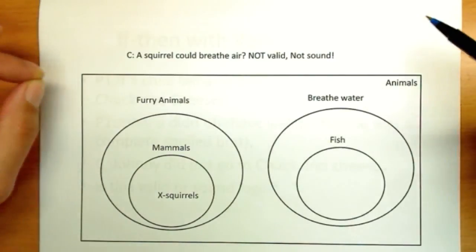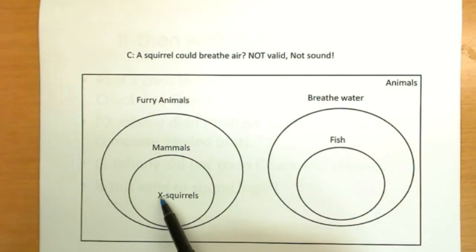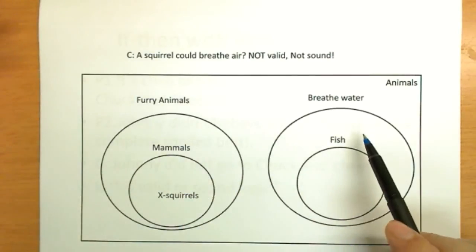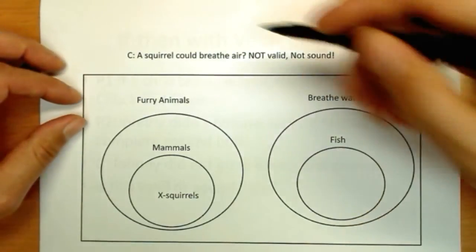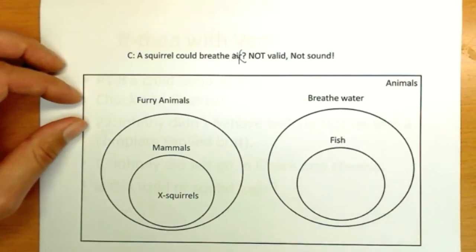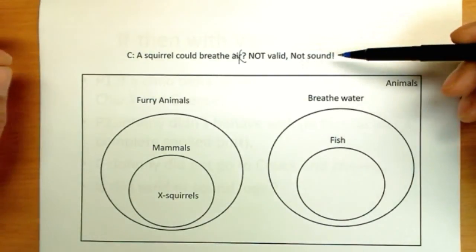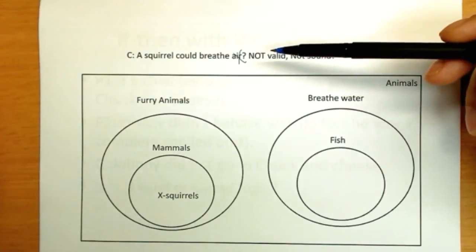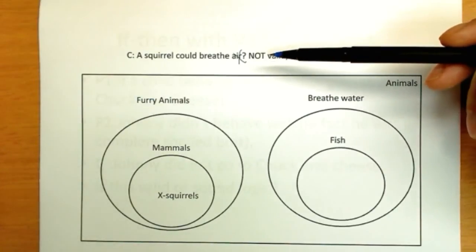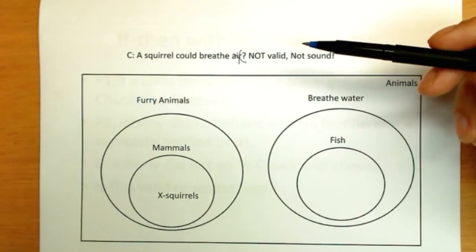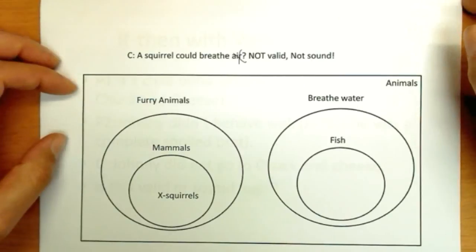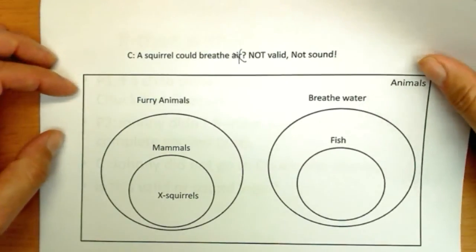Now putting in the other things we mentioned, fish breathe water. Mammals are furry. So they're contained inside. There are two things. And the squirrel, we were told, is a mammal. So I use an X to mark the spot where the squirrel are inside mammals, inside furry animals, which are clearly separated from breathing water. Could a squirrel breathe water? No, it could not. It's not valid. It's not sound that it could. So in this case, we have proven for sure that it's impossible for this squirrel to ever breathe water. And since it can't breathe water, the conclusion does not follow from the premises. There is no possibility of it doing what we were asked. So it's not a valid argument. It's not sound.